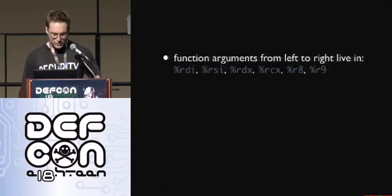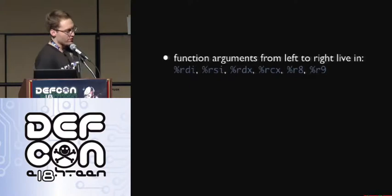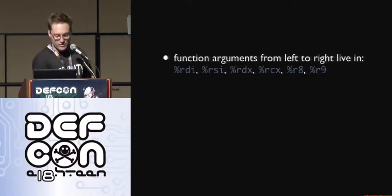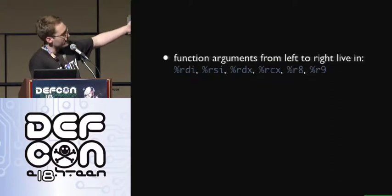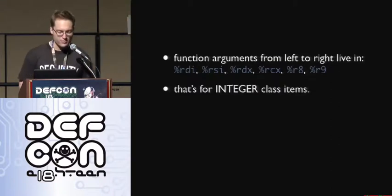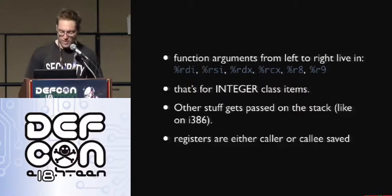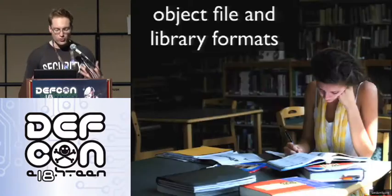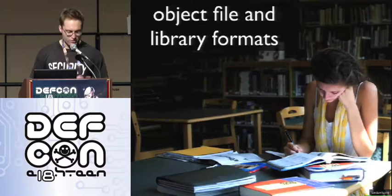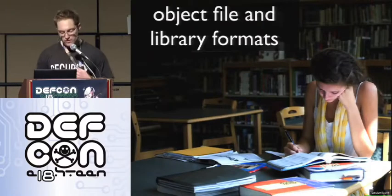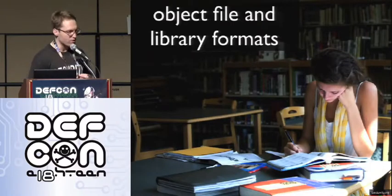We also need to care about calling convention. For calling convention, all we really care about is that function arguments live in registers left to right. So the first argument is in RDI, second in RSI, et cetera. But that's only for integer class items — other stuff gets passed on the stack, similar to the way arguments get passed on i386. Registers are either caller or callee saved. And that's all we pretty much need to know about calling convention to make binary patching work later.